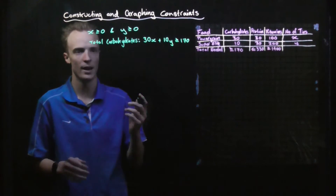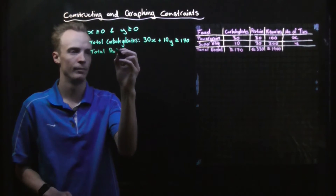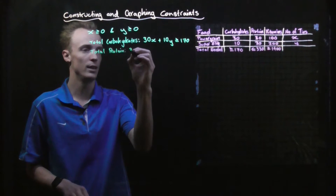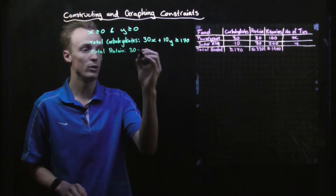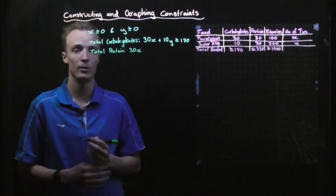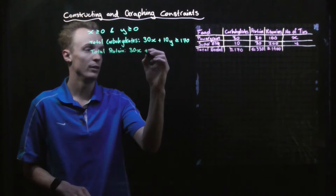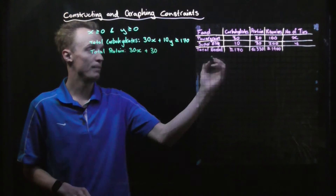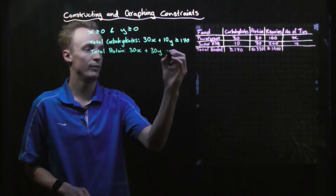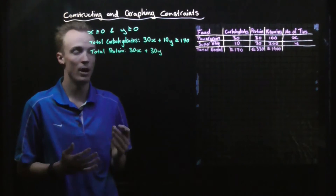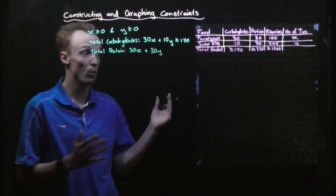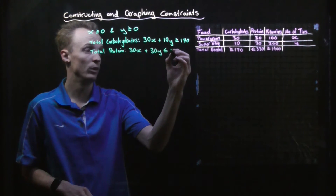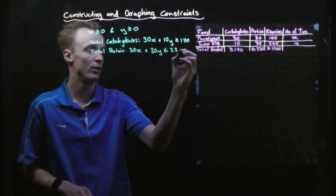We then repeat the same for protein. It's going to be 30 — because there are 30 units in Power Grain — multiplied by the number of tins of Power Grain, which is X. Add on 30 — because there are 30 units in Super Elite — multiplied by Y. The requirement for protein is no more than 330, so it's going to be 30X + 30Y ≤ 330.